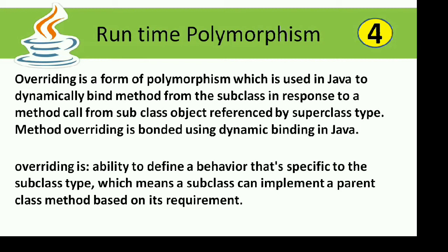What is overriding? It's the ability to define a behavior that's specific to the subclass type, which means a subclass can implement a parent class method based on its requirement. The method name and signature will be the same as in the superclass, both inside the superclass and inside the subclass. We'll see all these concepts in programs now.